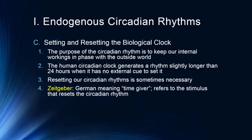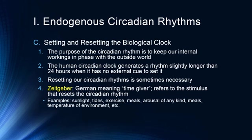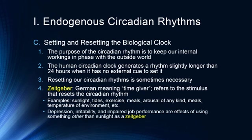The Germans have a phrase called a Zeitgeber — meaning 'time giver' — which refers to the stimulus that resets the circadian rhythm. Things like sunlight, tides, exercise, meals, arousal of any kind, and temperature of the environment are external cues that get us back on track. This is why it's difficult for shift workers to change shifts, and why shift work is so stressful — depression, irritability, and impaired job performance are effects of using something other than sunlight as a Zeitgeber.